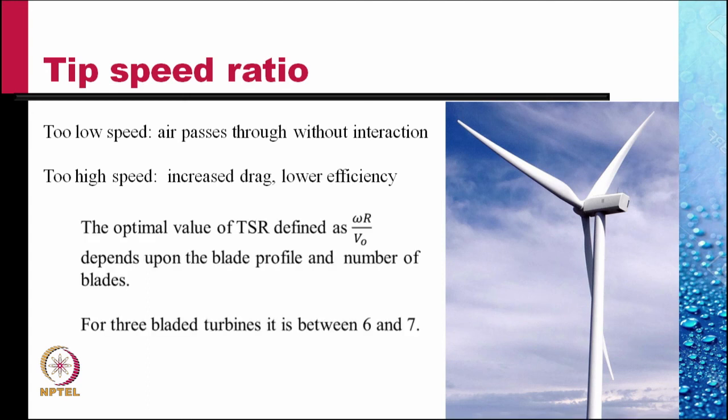The optimal value of the tip speed ratio which is defined as omega r divided by V naught depends upon the blade profile and the number of blades used. For three bladed turbines which are very common commercially, the optimal value of TSR is between 6 and 7.